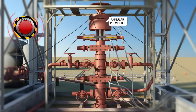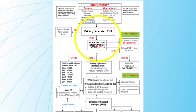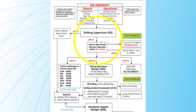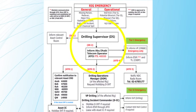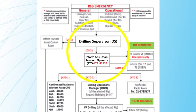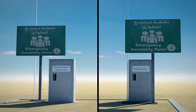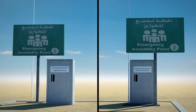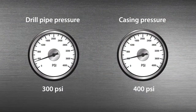Then the driller will activate the alarm and notify the ADCO drilling supervisor and rig manager. Meanwhile, at the rig site, the on-scene commander — the ADCO drilling supervisor — will notify the Abu Dhabi telecom operator and relevant assets control room, and raise emergency tier 1, which activates appropriate emergency response teams. Unnecessary crew will be evacuated to the nearest assembly point. The next step will be to monitor the shut-in drill pipe and the shut-in casing pressure gauges.